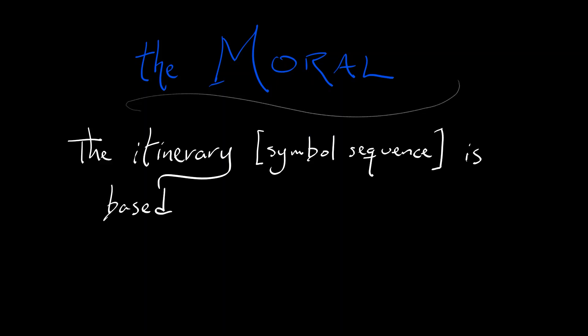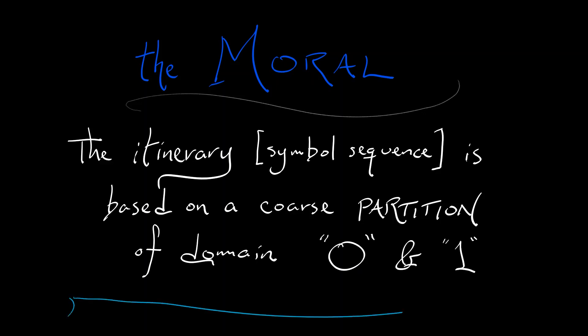Fine. So we've got our doubling map. We've got our tent map. We've got symbolic dynamics for both of these. What's the moral of the story? The moral of the story is that the itinerary, the symbol sequence, is based on this coarse partitioning of your domain into two pieces labeled 0 and 1. Why is that the moral of the story? That is the moral of the story because of how we're going to apply this to the horseshoe map next.